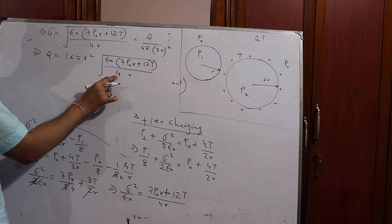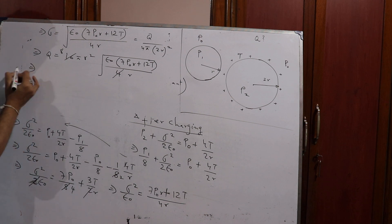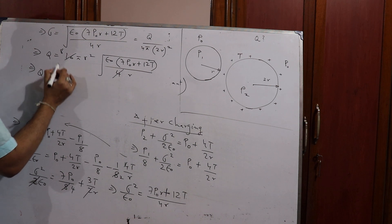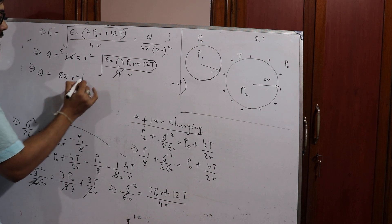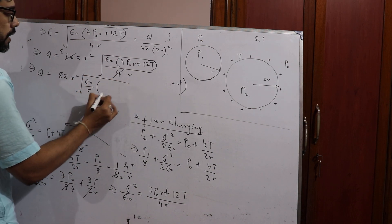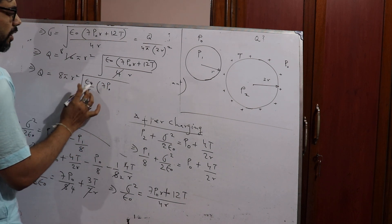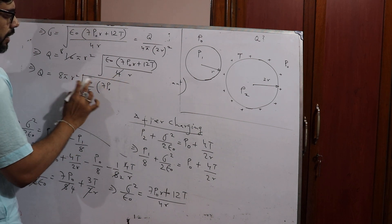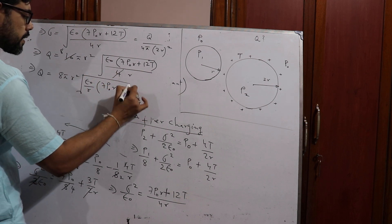Simplifying: taking √4 = 2 out of the square root and cancelling, we arrive at Q = 8πr² × √(ε₀(7P0·r + 12T) / 4r). Equivalently, bringing r inside the square root: Q = 8πr² √(ε₀(7P0·r + 12T)/4r). This is the final expression in the SI system of units.